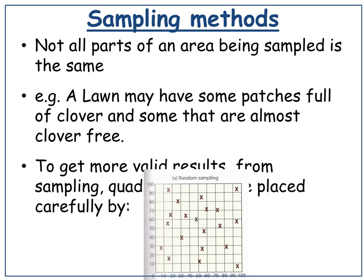Not all parts of the area being sampled are the same. Some of them might be wetter, the soil might be boggier, some might be in the shade, some might have more animal presence — birds on the grass. A lawn may have some patches full of clover where it's damper, and then some that are almost clover-free where it's a bit drier. So if you place the quadrats randomly, you get more valid results.